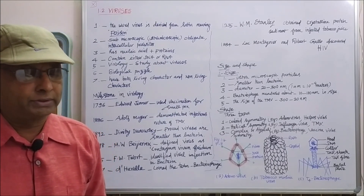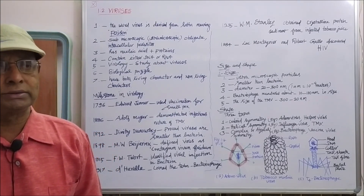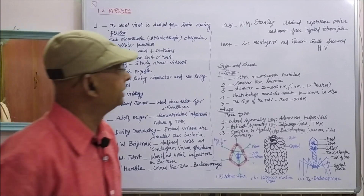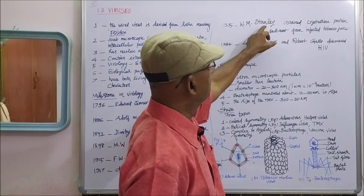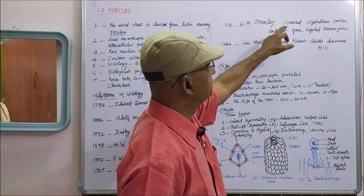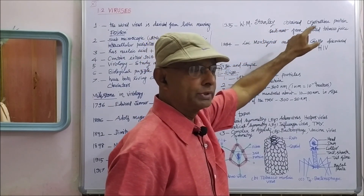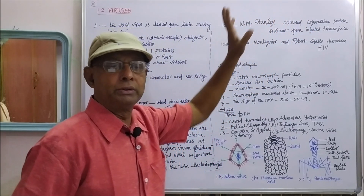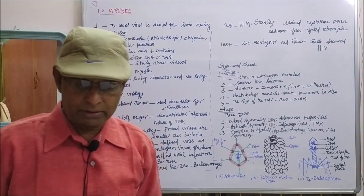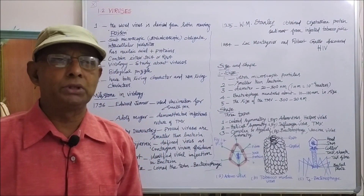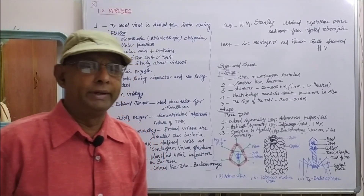Now, the non-living characteristic features of viruses. First: viruses can be crystallized. In the year 1935, W.M. Stanley crystallized the virus from tobacco mosaic juice. That crystallization ability is the non-living character of the virus.